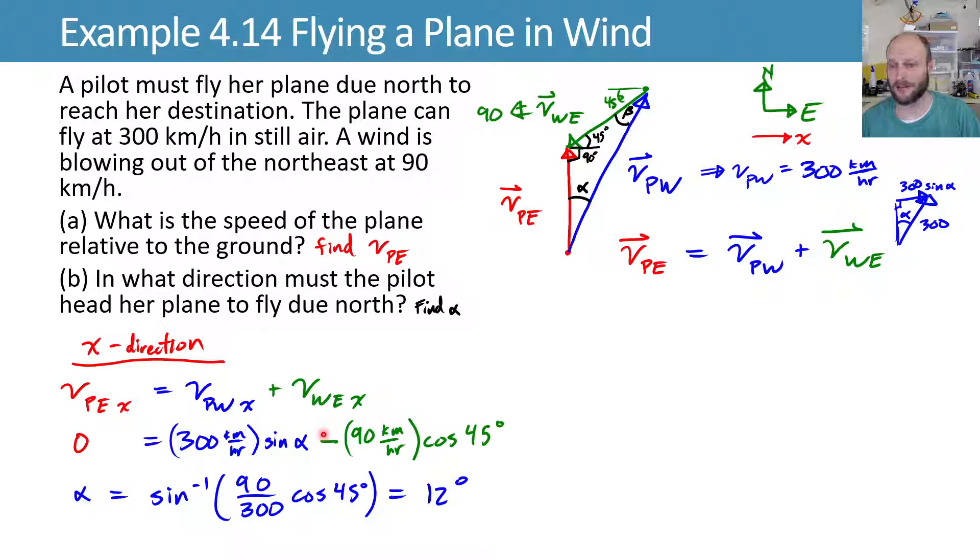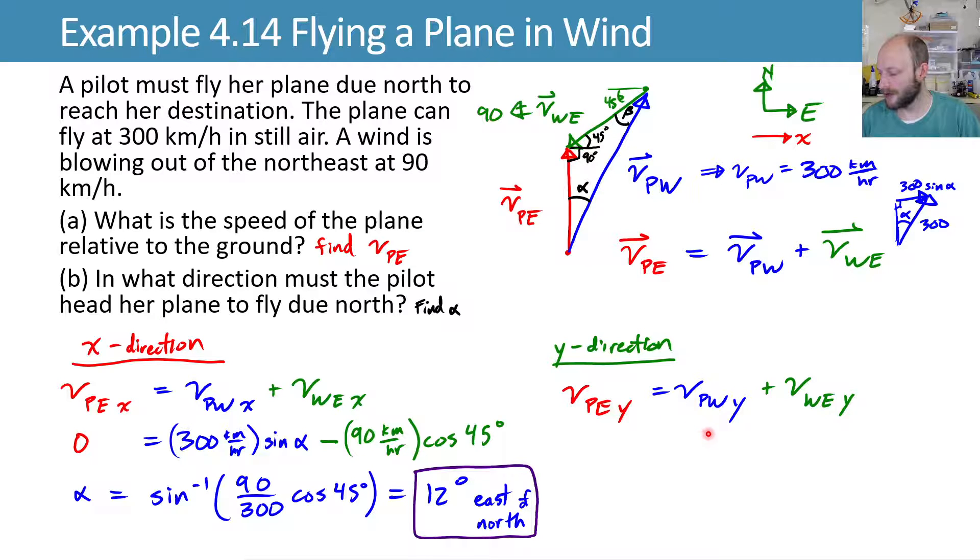And you can do the same thing in the Y direction to find our other thing we care about. What was it? It was VPE. So it only has a Y component. So it shows up when we plug this in. And then here we will now use cosine of alpha for the first term and sine of 45 for the second term. It turns out sine of 45 and cosine of 45 are the same, so that won't matter, but it's just good practice.